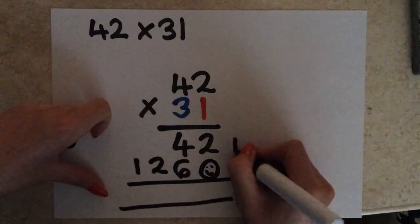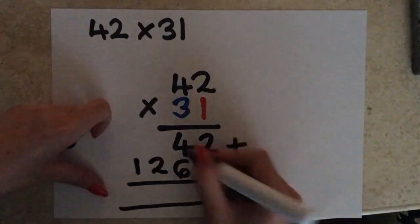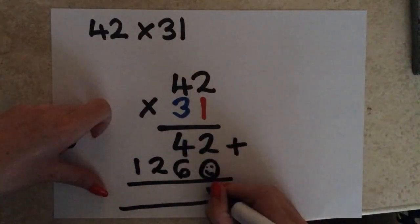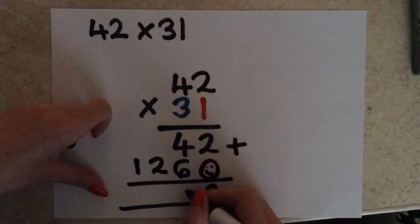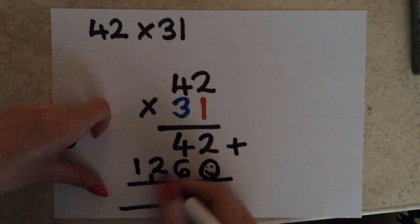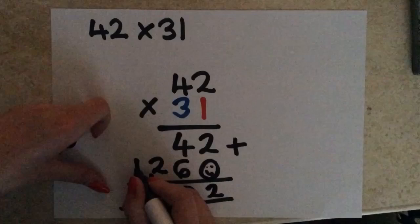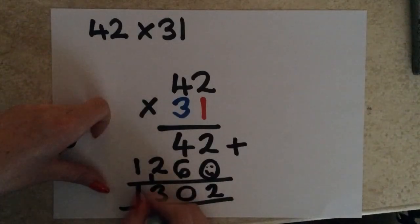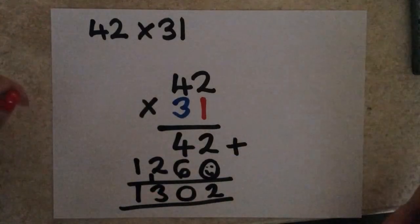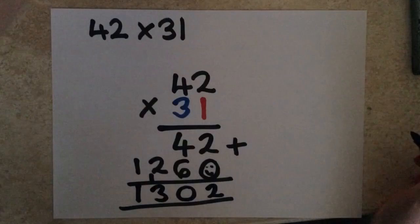And then, add those numbers together, making sure, again, that you've got everything in line. So, my units, that's going to give me 2. 4 plus 6 is going to give me 10. Carry the 1. 2 plus 1 is 3. And then, you've got your final one there, giving you a final answer of 1,302.